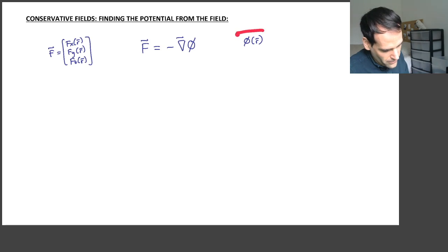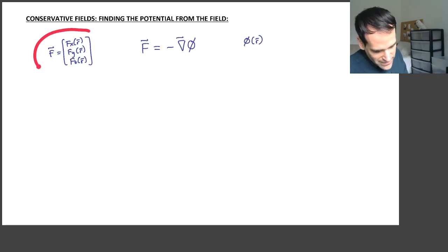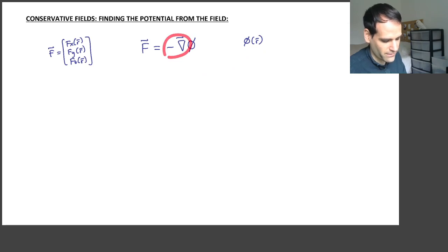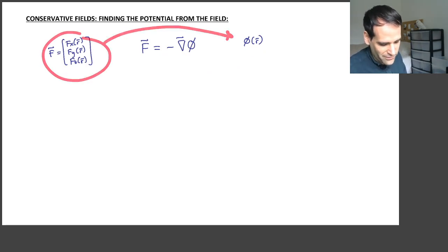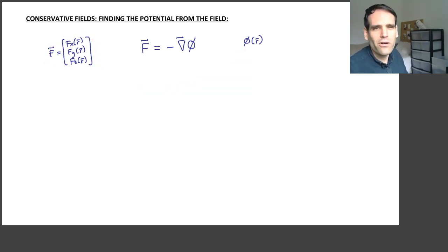You could think of it like compressing computer files — a zip file or a RAR file. You could imagine the field is the uncompressed file and the potential is the compressed file. So in order to uncompress it, you unzip it, which means you apply the minus gradient and get the three scalar fields corresponding to each component. That's very easy. But doing it the other way around — starting with the uncompressed file and compressing it — you need to know how to do that. There must be some algorithm to compress it back.